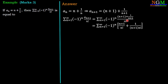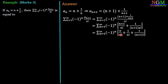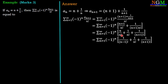Now we distribute the denominator, then we have (n+1)/n! plus 1/((n+1)·n!). We further split: n/n! + 1/n! + 1/(n+1)·n!. Note that (n+1)·n! = (n+1)!. Therefore we get 1/(n-1)! + 1/n! + 1/(n+1)!.